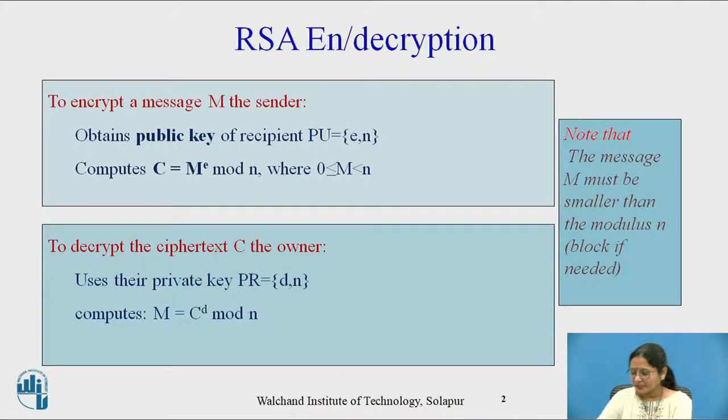As we have seen in the previous session, RSA encryption and decryption algorithm. To encrypt a message m, the sender first obtains the public key of the recipient, that is e and n, then computes ciphertext by formulating m raised to e mod n, where m is between 0 and n. To decrypt a ciphertext c, the owner uses their private key, that is d and n, then computes to find m with the formula c raised to d mod n.